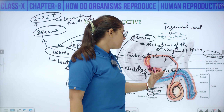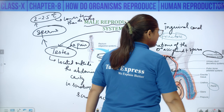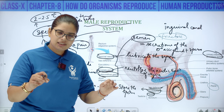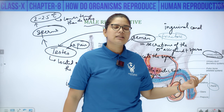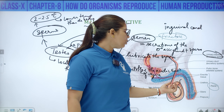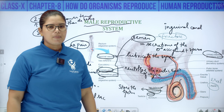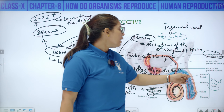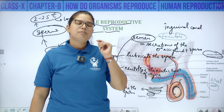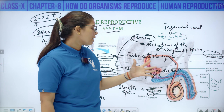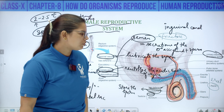From here the semen travels through the urinary bladder area and at the time of ejaculation, the penis — the external genitalia of the male — is the passage through which both urine and sperm are discharged. The discharge of sperm is called ejaculation. At the time of ejaculation, the penis becomes erect due to erectile tissue. This erection allows the sperm to be transferred into the vagina of the female.